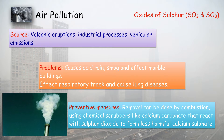Sulfuric acid is responsible for acid rain. Acids can destroy buildings, marbles, and other structures. Sulfur dioxide and sulfuric acid are also responsible for respiratory and lung diseases. So how can we prevent this?